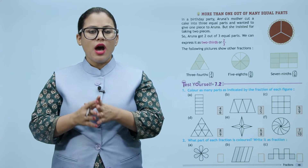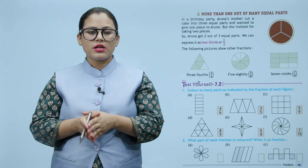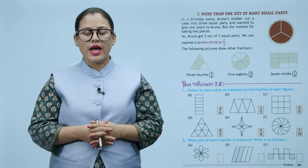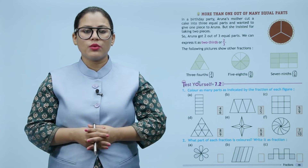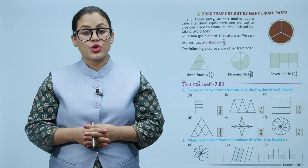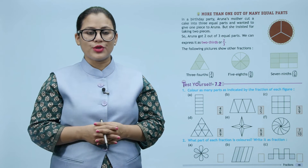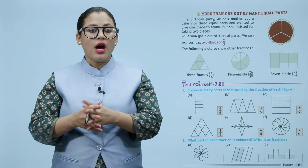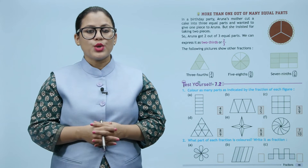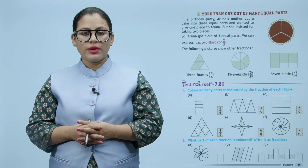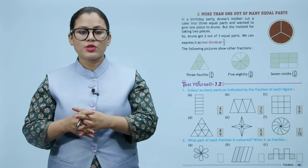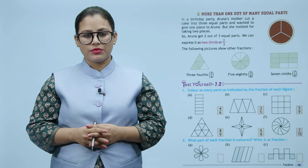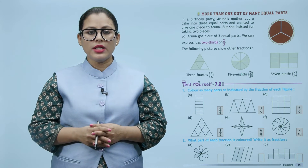In a birthday party, Aruna's mother cut a cake into three equal parts. Anne wanted to give one piece to Aruna but she insisted on taking two pieces. So, Aruna got two out of three equal parts. We can express this as two-thirds, or two by three.